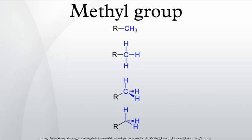Some compounds are considered to be sources of CH3+, and this simplification is used pervasively in organic chemistry. For example, protonation of methanol gives a strongly electrophilic methylating reagent: CH3OH + H+ → CH3+ + H2O. Similarly, methyl iodide and methyl triflate are viewed as equivalents of the methyl cation because they readily undergo SN2 reactions by weak nucleophiles.